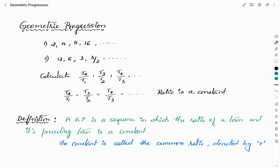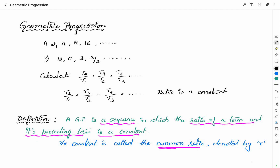This type of sequence, in which the ratio of a term to its preceding term is a constant, is known as geometric progression. The definition of geometric progression is that it is a sequence in which the ratio of a term and its preceding term is a constant, and this constant is known as the common ratio, denoted by the letter R.